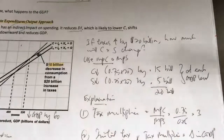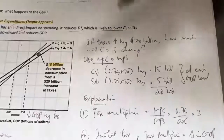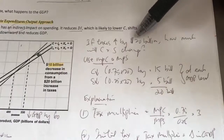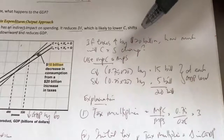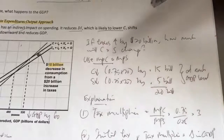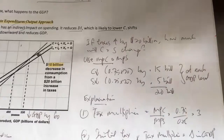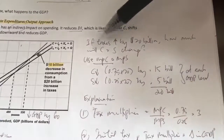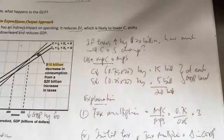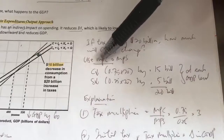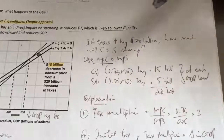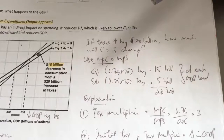Let's put some figures into our example. Say taxes increase by $20 billion. How much will consumption and savings change? You know there's a relationship between income, consumption, and savings, and when taxes change, it will affect disposable income. This is why we need to use the concepts of MPC and MPS — given a change in income, how much will consumption and savings change?